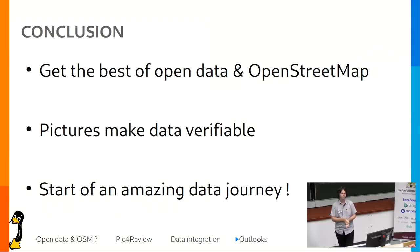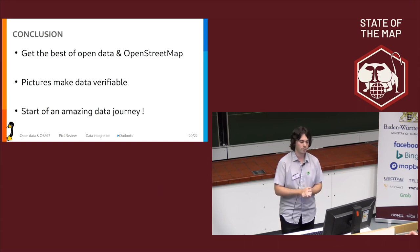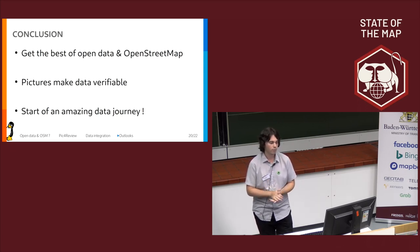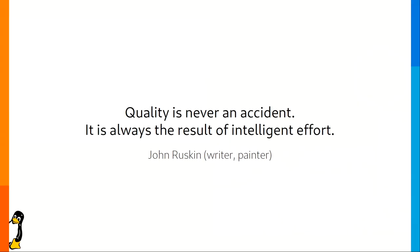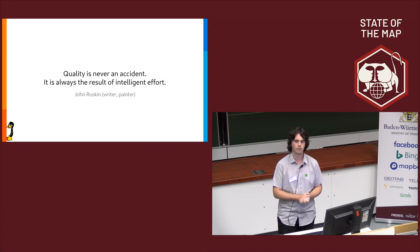As a conclusion, this tool is quite simple but makes it possible to take the best of open data and OpenStreetMap — the quality of OpenStreetMap and the exhaustivity of open data sets. Pictures make the data verifiable because we are sure the information is there, we have a survey date, and things are clear about where the information is coming from. I hope this is the start of an amazing data journey. And as a closing quote: 'Quality is never an accident. It is always the result of intelligent effort.' — John Ruskin, writer and painter.